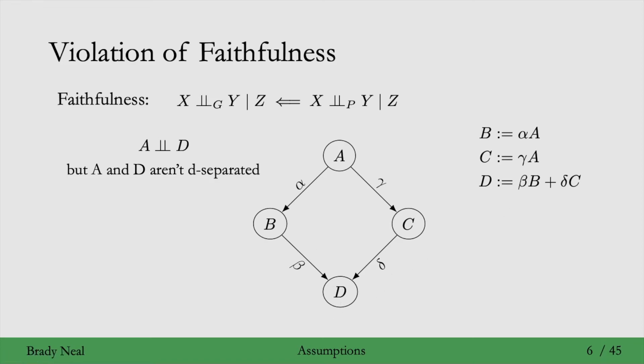If we plug in for b and c in the structural equation for d, if we plug in their corresponding structural equations, then we get this for d in terms of a. This captures the association flowing from a to d. It's alpha times beta plus gamma times delta.